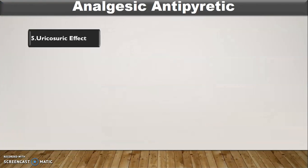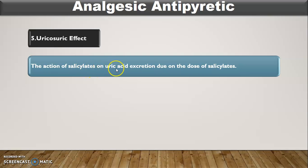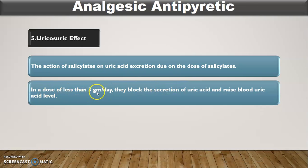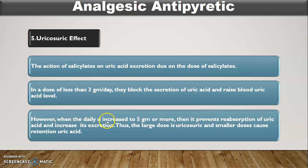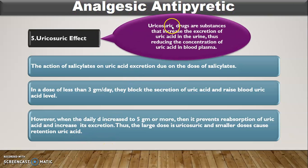The next effect is the uricosuric effect. The action of salicylates on uric acid excretion depends on the dose. In a dose less than 3 grams per day, they block the secretion of uric acid and raise the blood uric acid level. However, when the daily dose increases to 5 grams or more, they prevent the reabsorption of uric acid and increase its excretion. Thus, in large doses it is uricosuric, and in small doses it causes retention of uric acid. Uricosuric drugs are substances that increase the excretion of uric acid in the urine, thereby reducing the concentration of uric acid in the blood plasma.